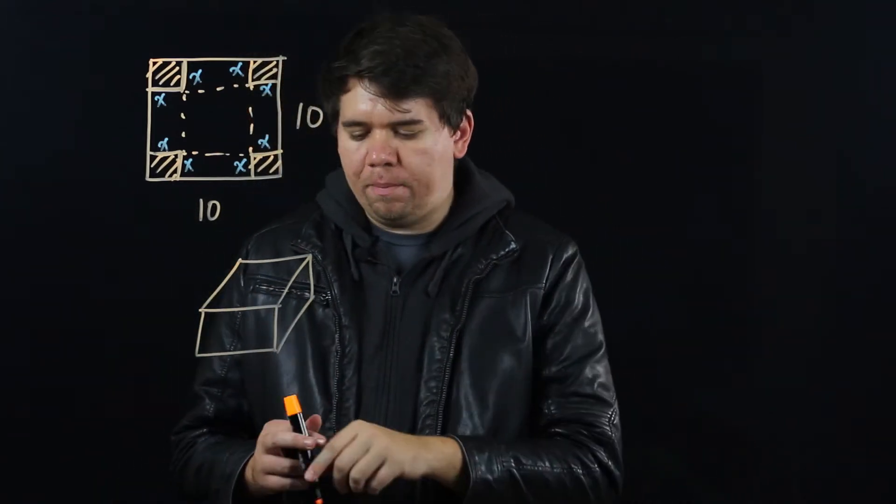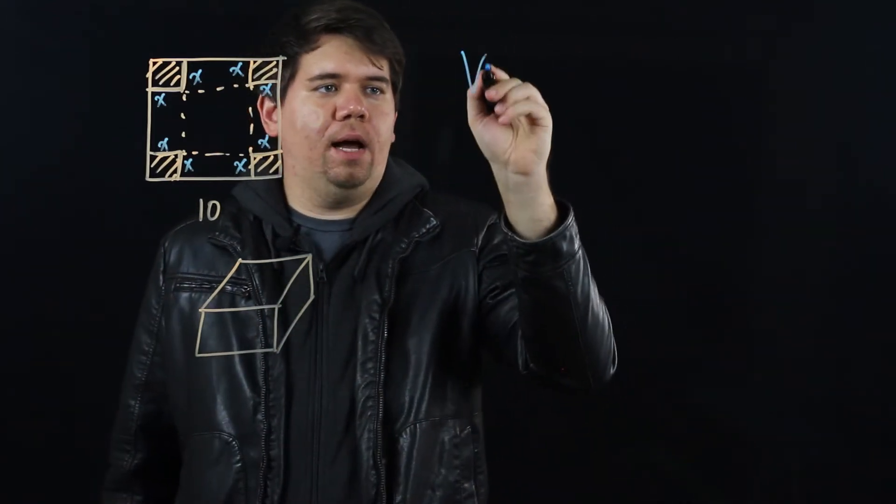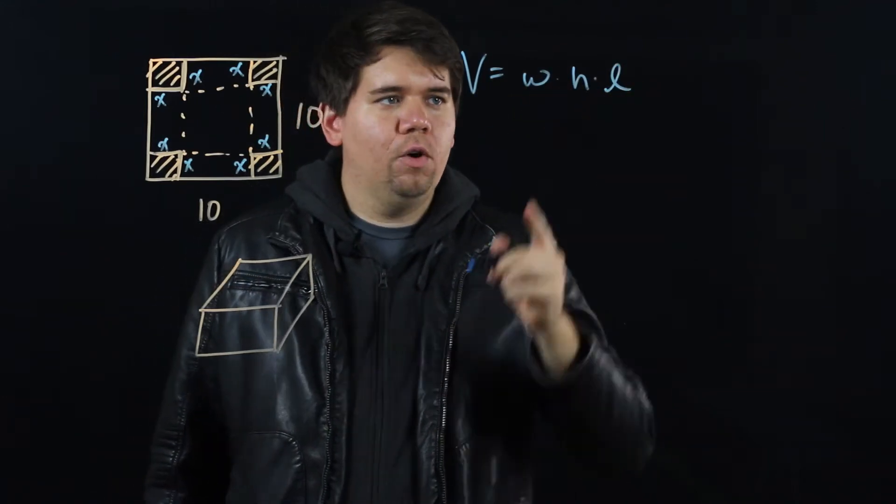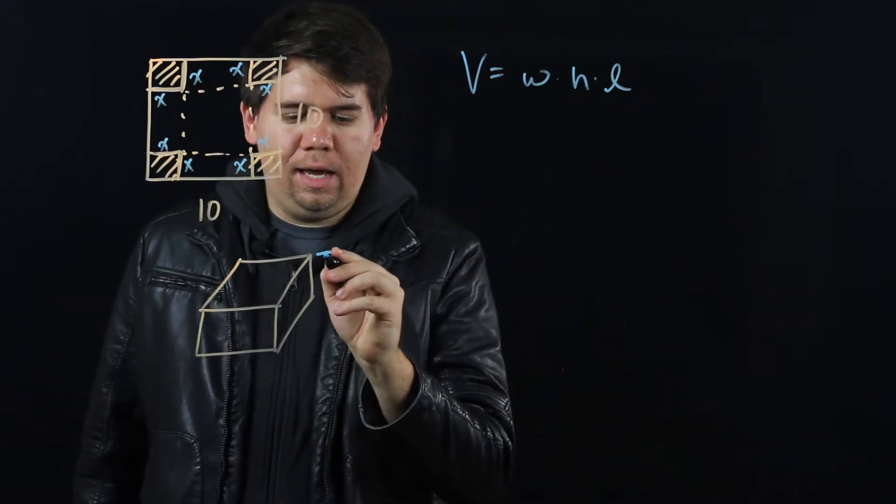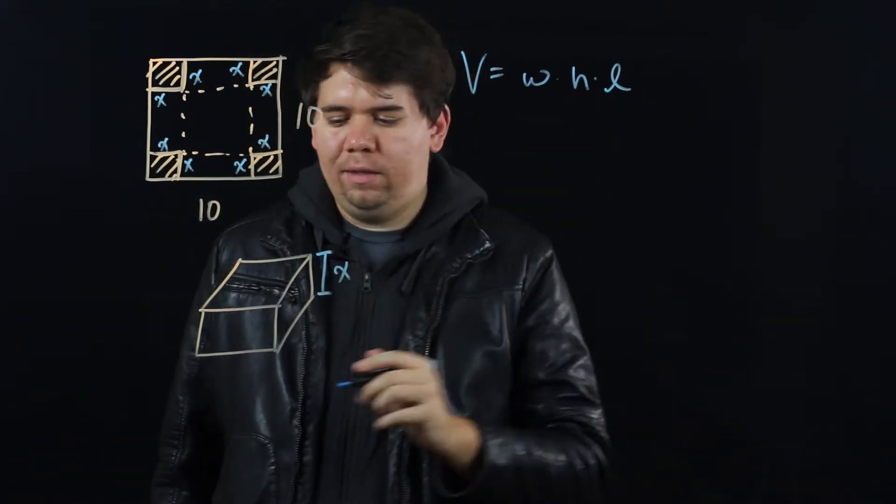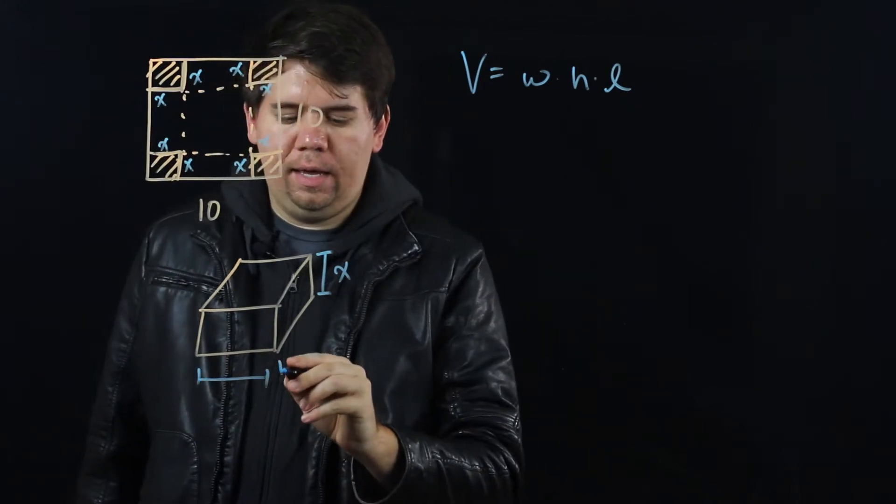Now we know the volume of a box is given simply by width times height times length. Well, the height is easy. The height of the box is just x. How about the width and the length?